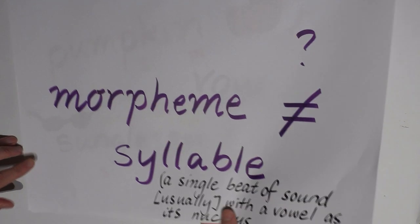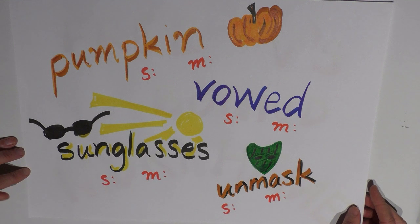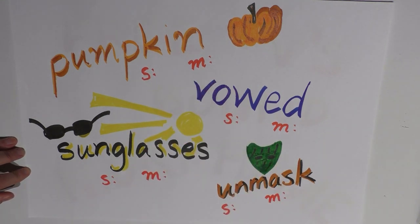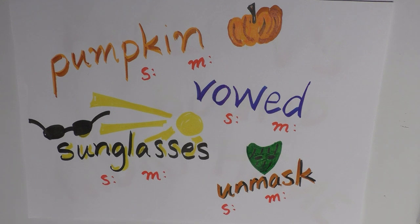Let's have a look at four words: pumpkin, vowed, sunglasses, and unmask. Underneath each word I've written S for syllable and M for morpheme, and we're going to figure out how many syllables and how many morphemes are in each word. It's worth noting that because history goes a long way back and we don't always know the original meanings of words, sometimes we're not fully aware of how many morphemes are in a word unless we really dig into etymology. So the way we figure out morphemes, if we don't know, is by identifying the smallest meaningful part of the word that we currently understand — though sometimes we might be wrong.